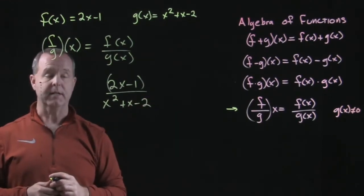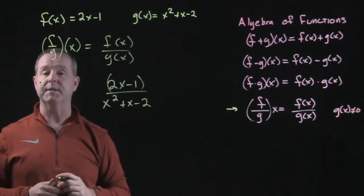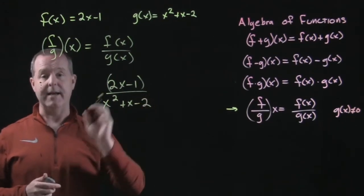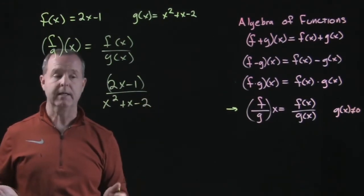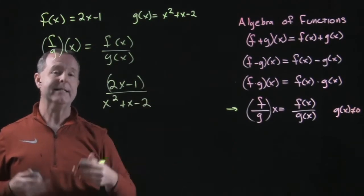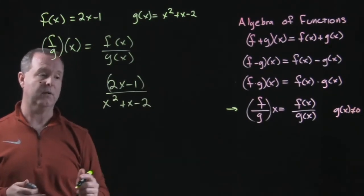That cannot be reduced any further, so this is in reduced form. However, I need to be aware of any domain issues. And since we're dividing by something, we have to be careful that the denominator does not equal zero.